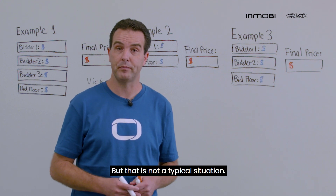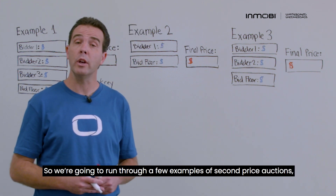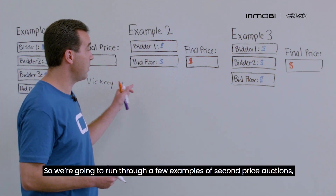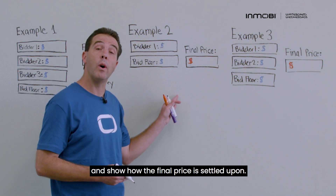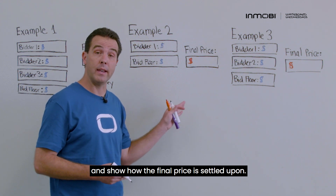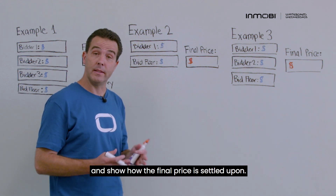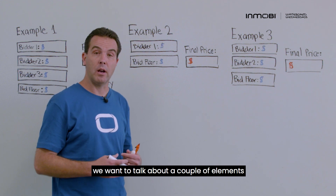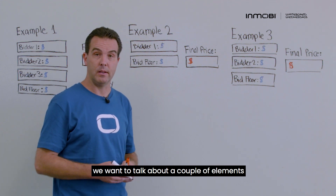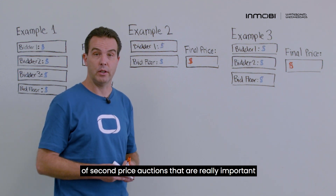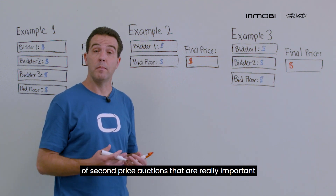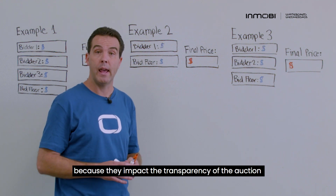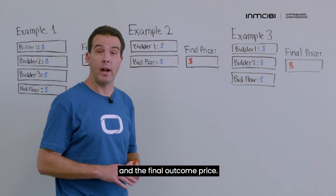We're going to run through a few examples of second price auctions and show how the final price is settled upon. But before we do that, we want to talk about a couple of key elements of a second price auction that are really important because they impact the transparency of the auction and the final outcome price.